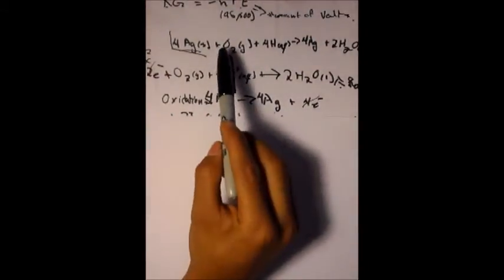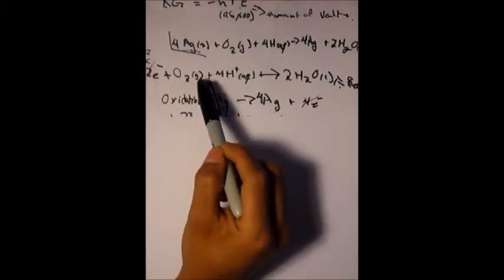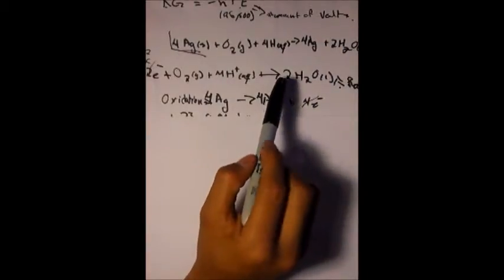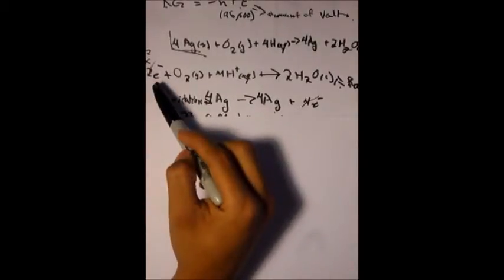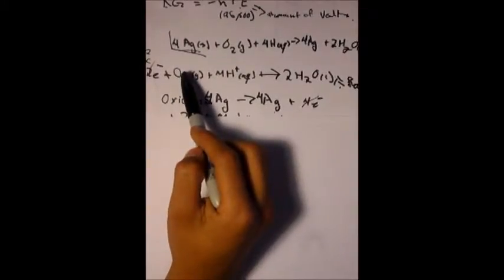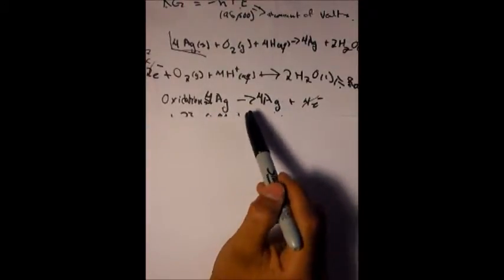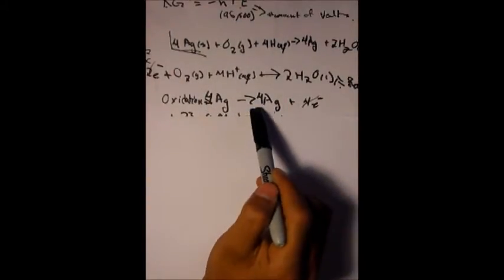In electrochemistry we have to find the reduction and oxidation, separating the regular equation into two. We're gonna separate the oxygen and the silver. Oxygen will be O2 plus 4H+ plus 4e- to 2H2O. To balance the equation we'll add two electrons on the left side making this the reduction equation. The other one is 4Ag+ to 4Ag, which is the oxidation.